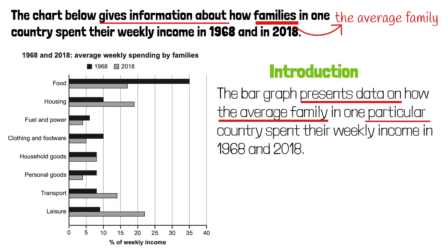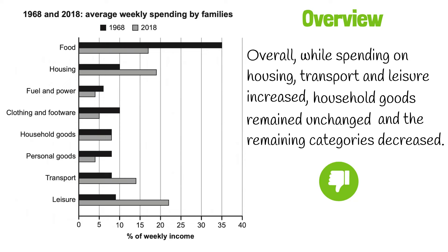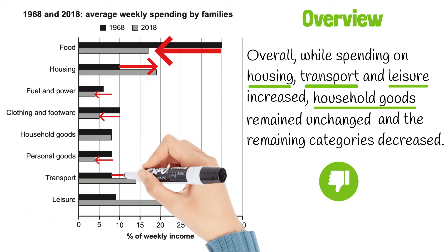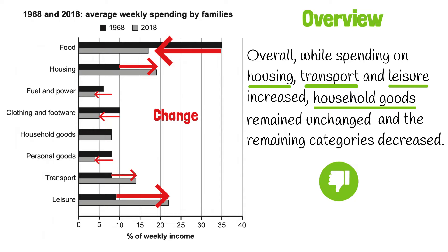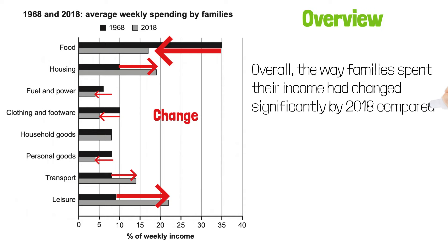Now let's move on to the overview paragraph. Here's a better way to write it. Overall, while spending on housing, transport, and leisure increased, household goods remained unchanged and the remaining categories decreased. Do you really want to list categories like this? Increases and decreases mean that they changed, and as you can see, in most categories the changes are very significant. So how about we simply say that the way families spend their income had changed significantly by 2018 compared with 1968.